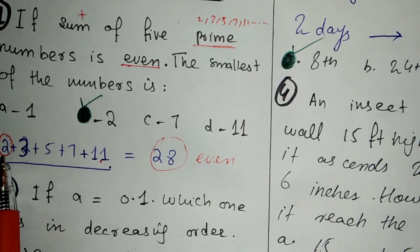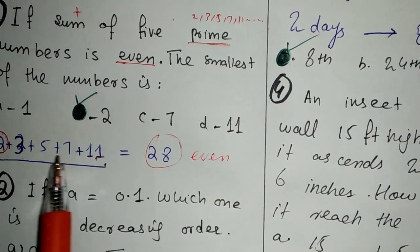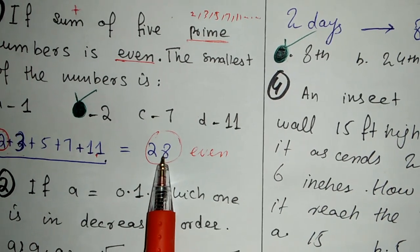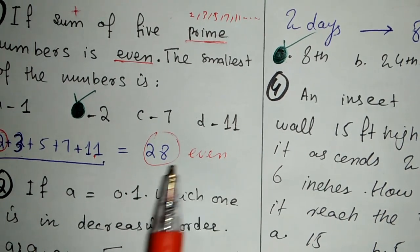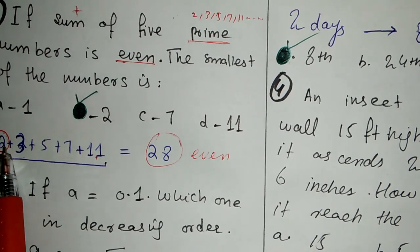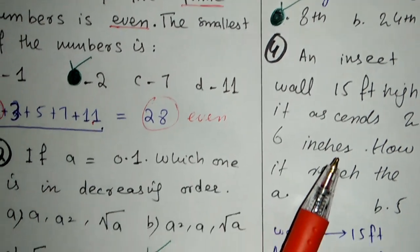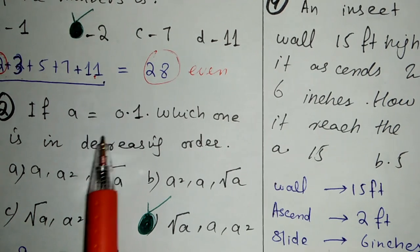Taking the prime numbers 2, 3, 5, 7, 11, we add them: 2+3+5+7+11 = 28, which is even. The smallest number is 2. This is our correct answer. Now let's look at other types of MCQs.